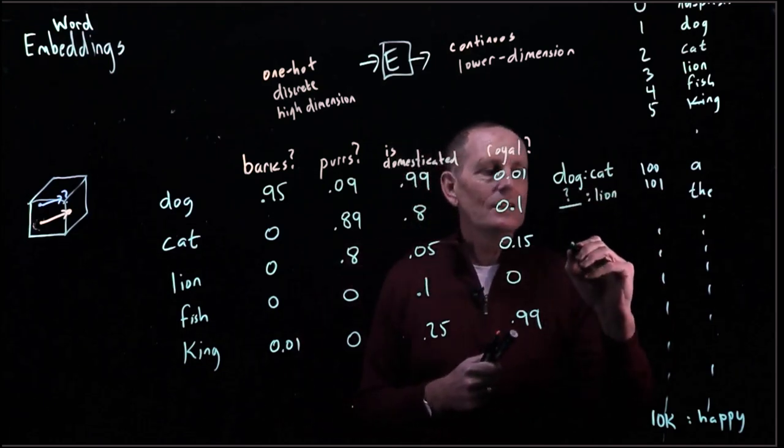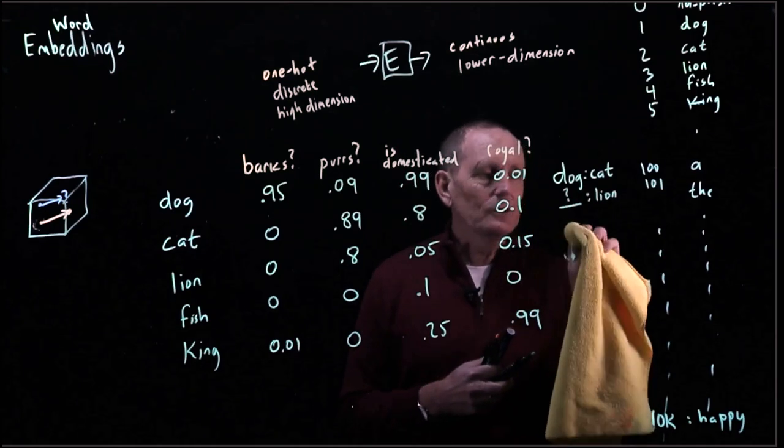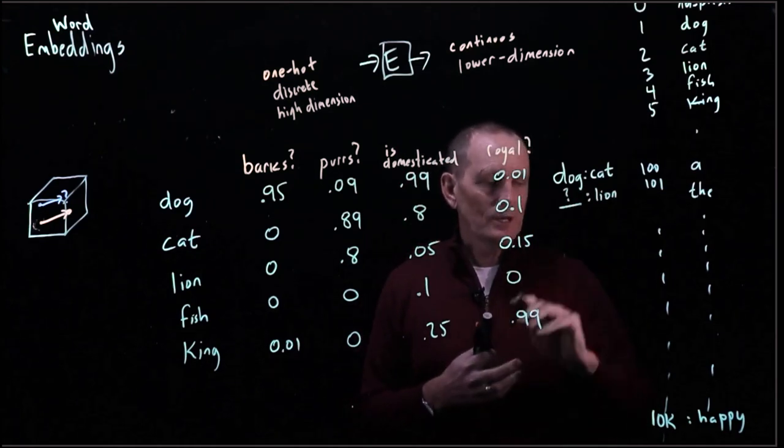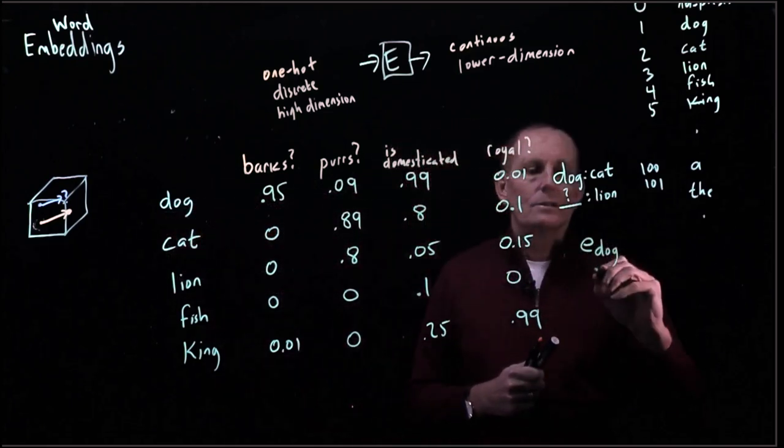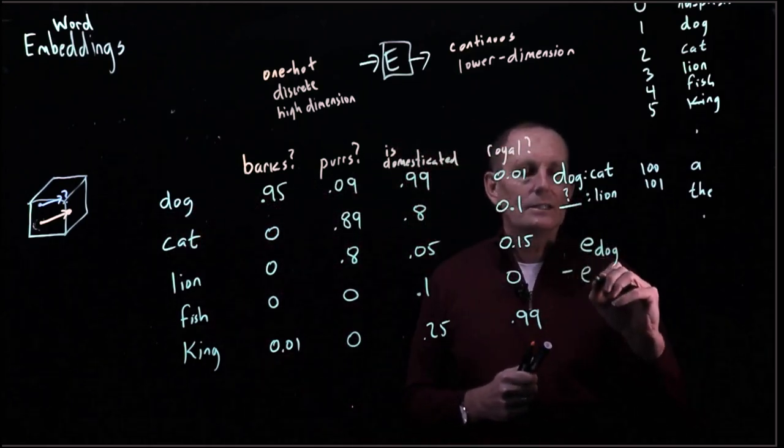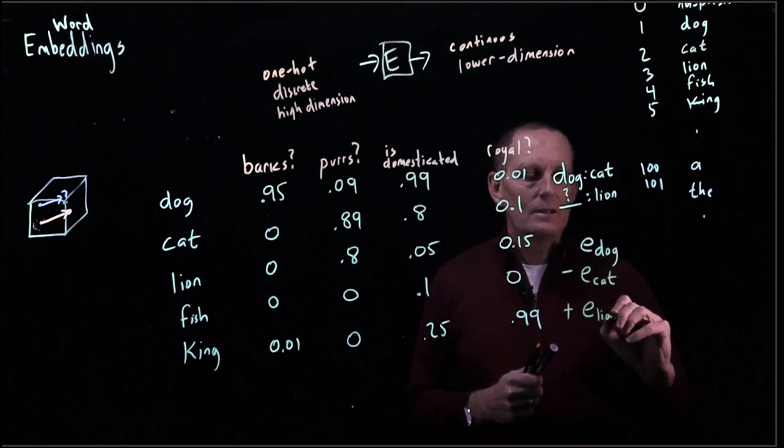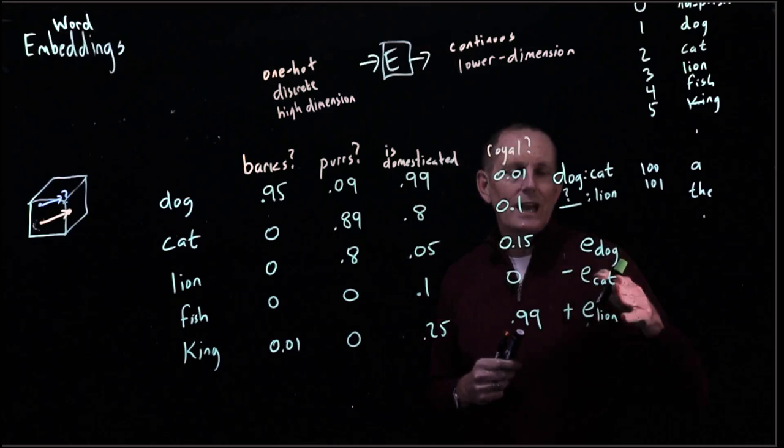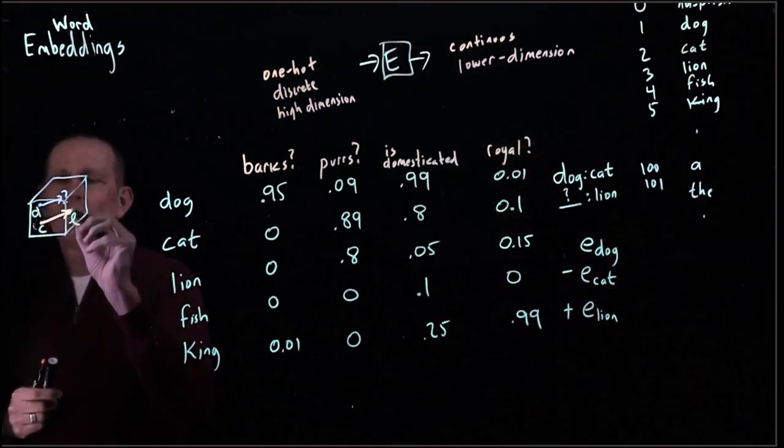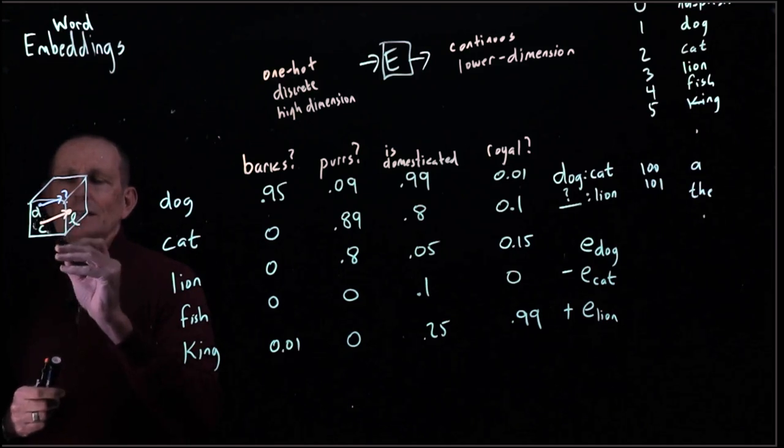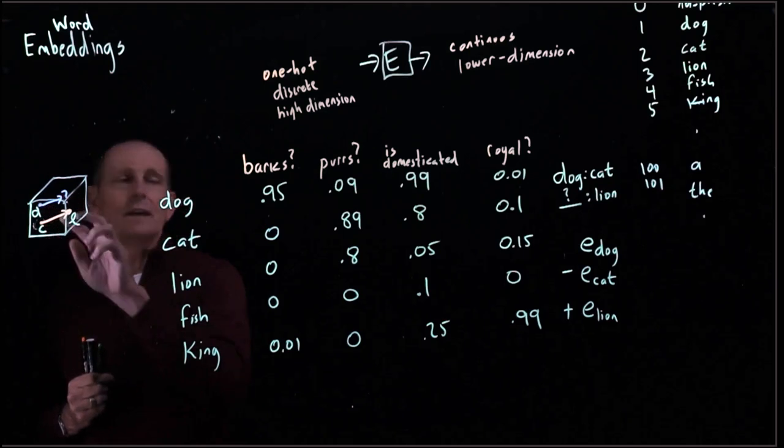So what we can do, basically, is we can take the embedded value for dog. So we're going to go ahead and take E dog. So that's just this line here. Minus E cat plus E lion. That is, dog is to cat as lion. This is cat and lion and this is dog. So we're going to say lion minus cat plus dog. Lion minus cat because it's this vector and then we'll add that vector to dog.